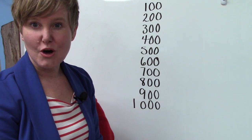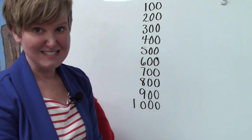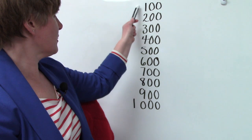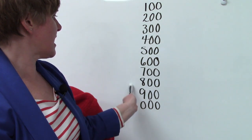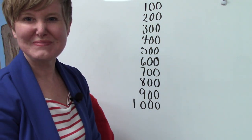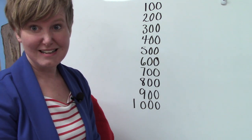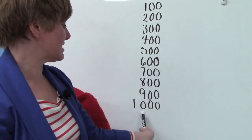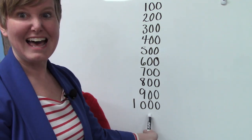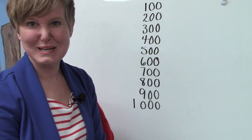You'll notice on one thousand that I put the one way over here, and there aren't any numbers there. That's because I put it in the one thousands place. And there's a zero in the hundreds place, and a zero in the tens place, and a zero in the ones place.